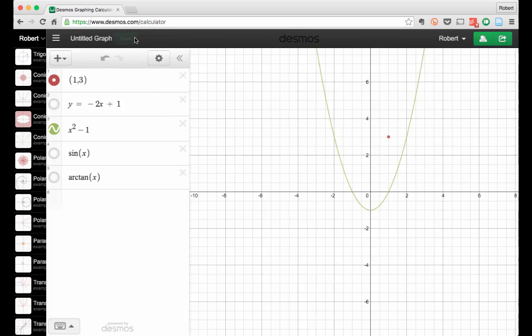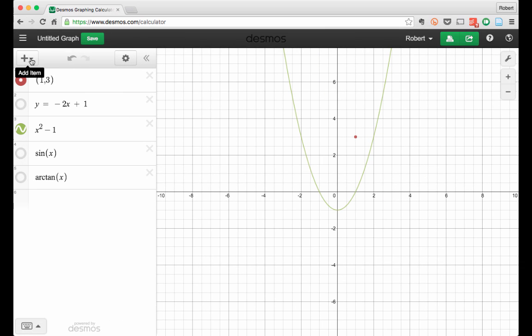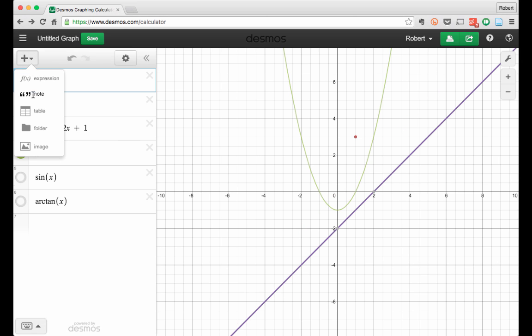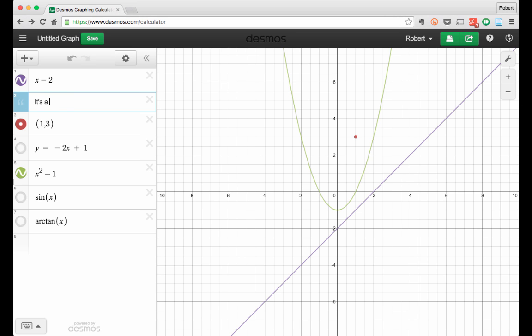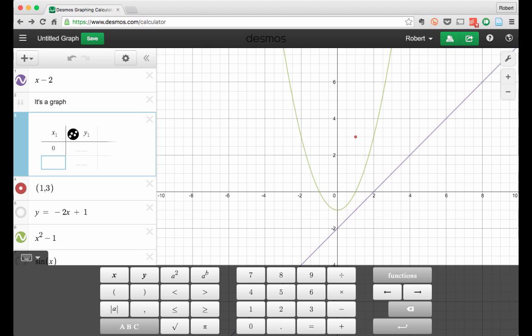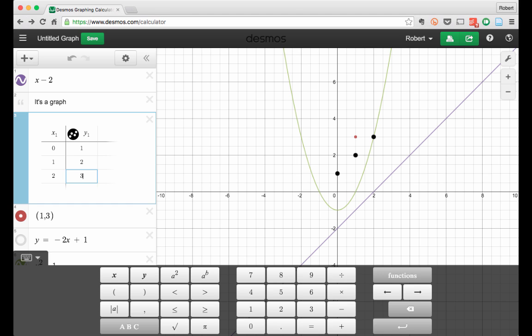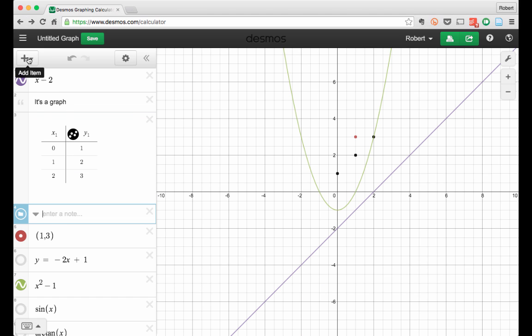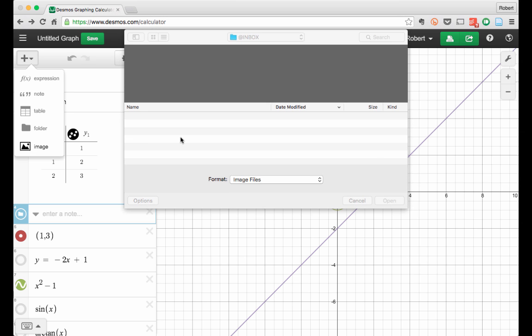The plus button allows you to add different kinds of objects to the screen. Adding an expression has the same effect as hitting enter. Adding a note allows you to add a text note so you can create a series of graphs with some annotations. Adding a table allows you to enter in a table of data and then create a scatter plot from the data. You can add a folder to collect together a series of graphs and notes, or you can even add an image.